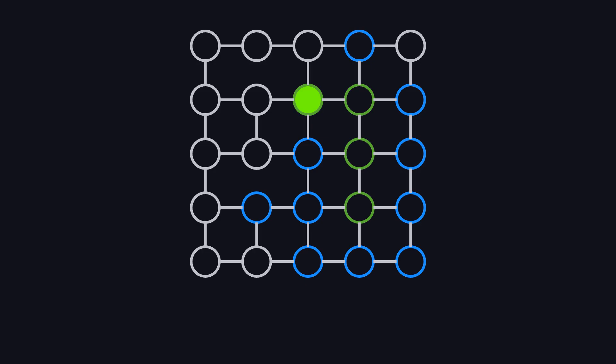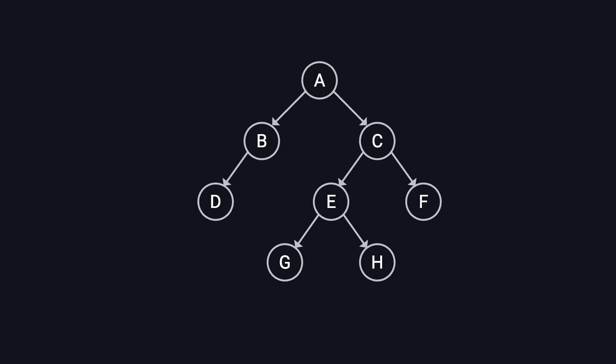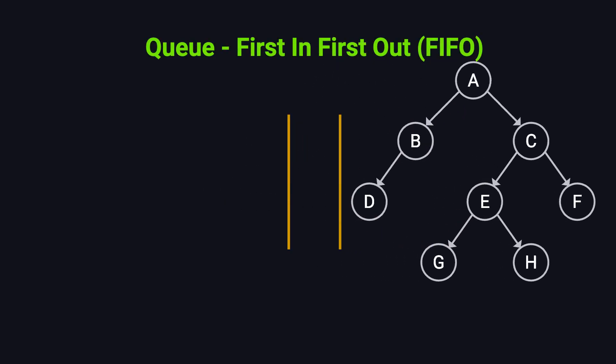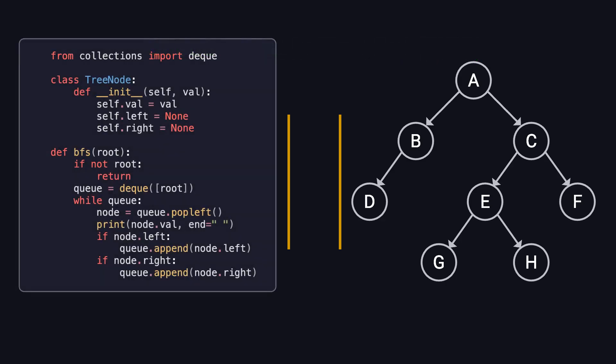BFS explores a graph or tree level by level, visiting all adjacent nodes first before expanding outward until it finds the target. Now, let's use a binary tree as an example to demonstrate how BFS works. In BFS, we use a queue to manage the traversal order. A queue follows the first in, first out principle, ensuring that we always visit the closest nodes first before moving to deeper levels. On the left side of the screen, you'll see the Python implementation of BFS. We use the deque from the Collections module to efficiently handle our queue operations.